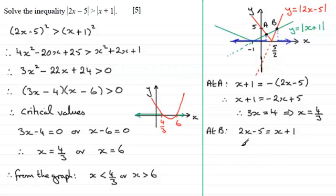And so again, just need to solve this. We can do it by subtracting x from both sides, 2x take x is x, and adding 5 to both sides gives us 1 add 5, which is 6. So we've got this point here, which is 6. So you can see we wanted values that were less than this one at A, which is less than 4 thirds, or more than this value of x at B, which would be more than 6.